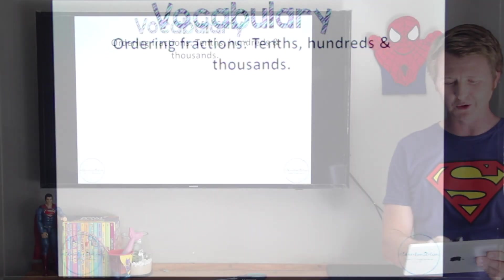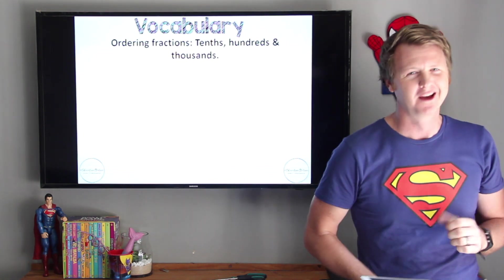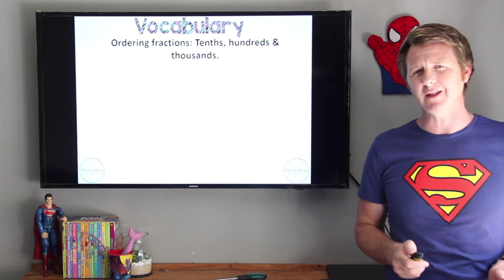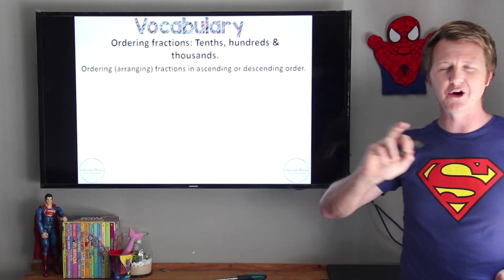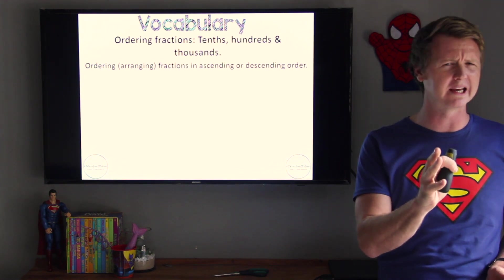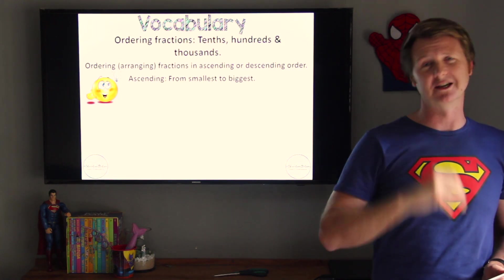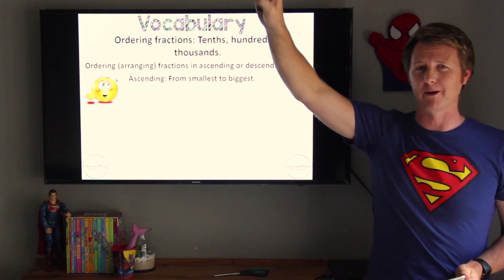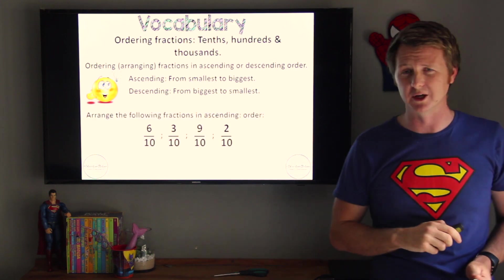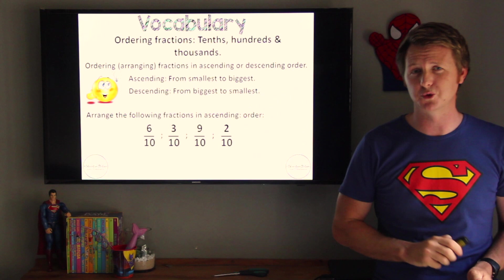That brings us to the next topic, which is ordering fractions. Now boys and girls, ordering fractions is not you climbing on your mobile phone on the McDonald's app and ordering yourself a set of fractions. Ordering in this case is when we arrange fractions in either ascending or descending order. Ascending order is from smallest to biggest — think of a plane that's ascending, it's going up. Descending is therefore from the biggest to the smallest. Now let's have a look at this group of fractions, and we're going to arrange them from smallest to biggest, which is ascending order.